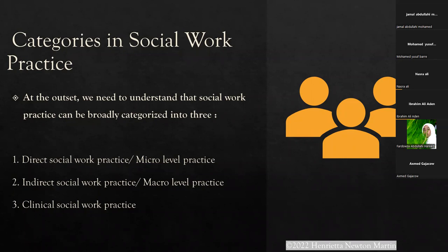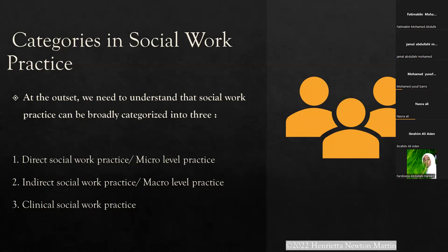Next is indirect social work practice — that is the opposite. It is at the macro level where there are other people involved in the social service scheme who are not directly in touch with the subject. Probably they are working behind the curtains — for example, accountants, the finance team, the legal team, and the human resources team. All these people work behind the scenes, so this is indirect social work practice.